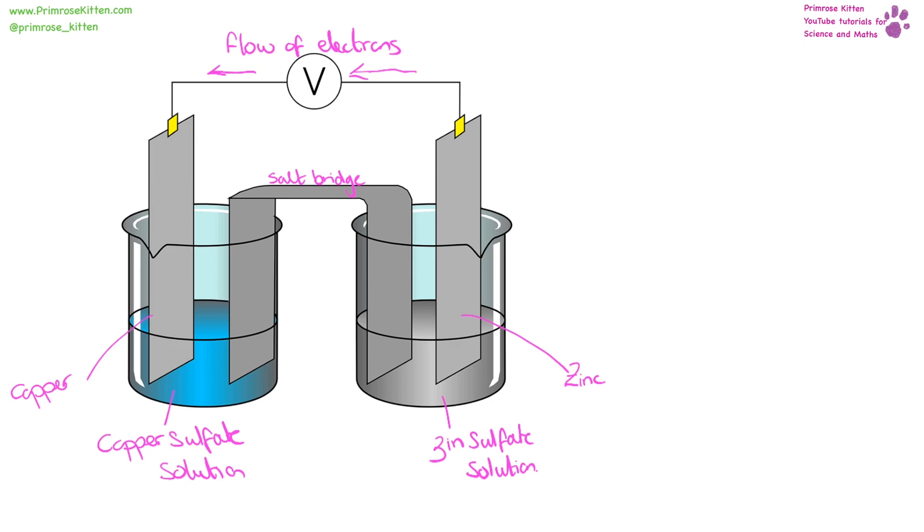Here we have a simple cell with two different metals, copper and zinc, in their own solution. So here is zinc in zinc sulfate solution and copper in copper sulfate solution. They are connected by a salt bridge or an ion bridge, and because zinc is high in the electrochemical series, it is going to push electrons this way towards copper. A flow of electrons means we are going to have a potential difference.